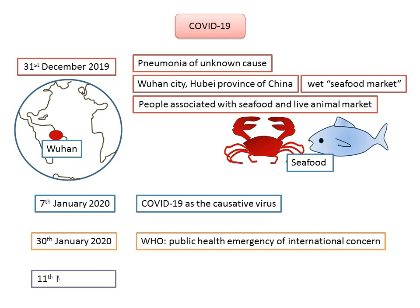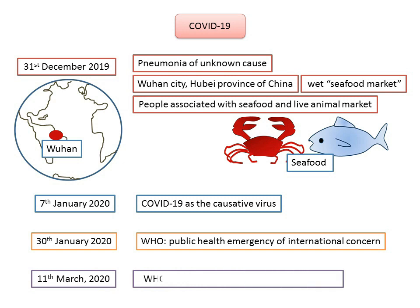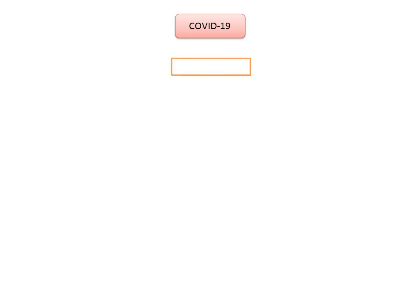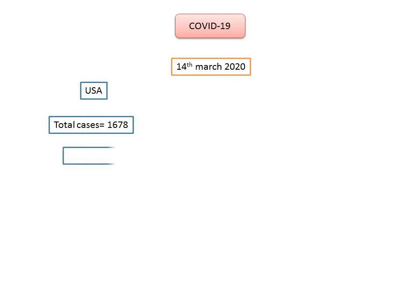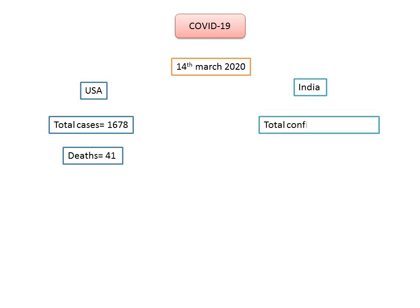On 11th of March 2020, the WHO Director General, Dr. Tedros Adhanom Ghebreyesus, in his opening remark at the media briefing on COVID-19, characterized COVID-19 as a pandemic. The term pandemic relates to a disease which is prevalent over a whole country or the entire world. As of 14th of March 2020, in the United States of America, 1,678 cases have been reported with 41 deaths. And in India, 82 confirmed cases have been reported with two deaths.